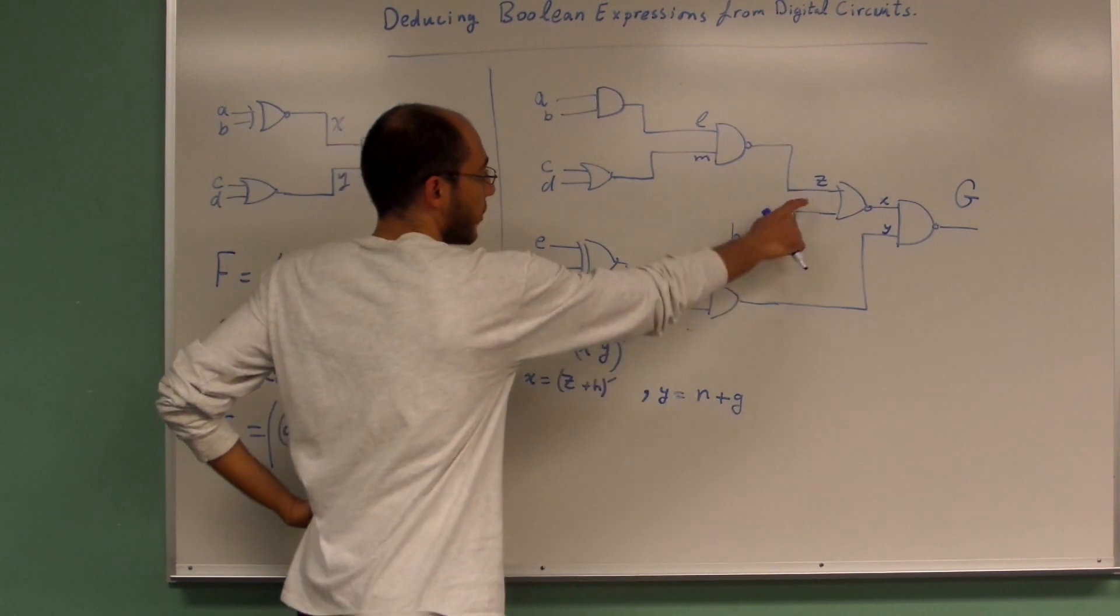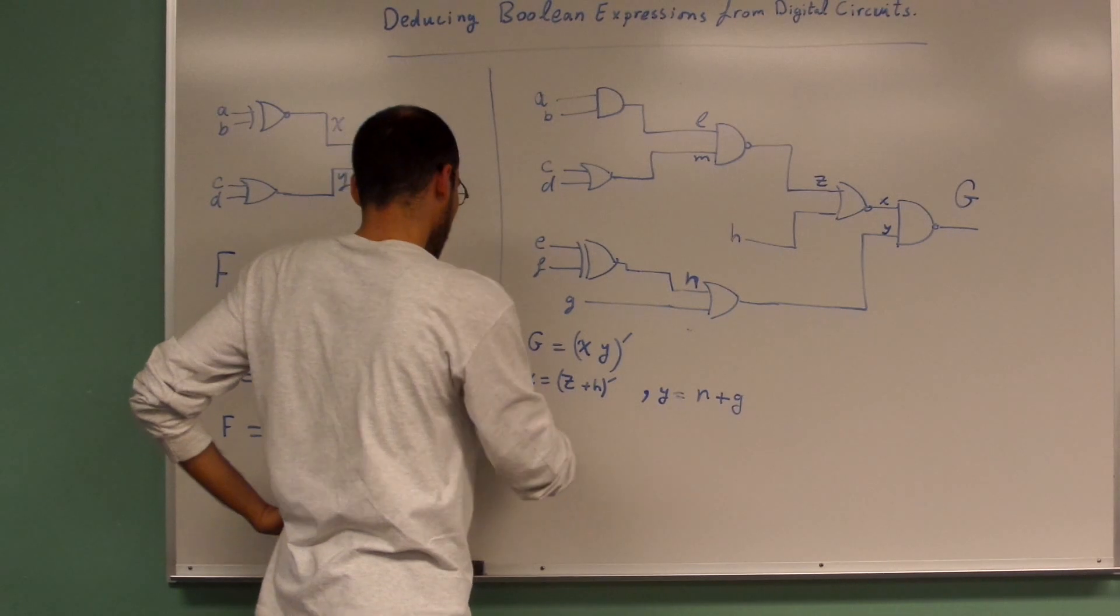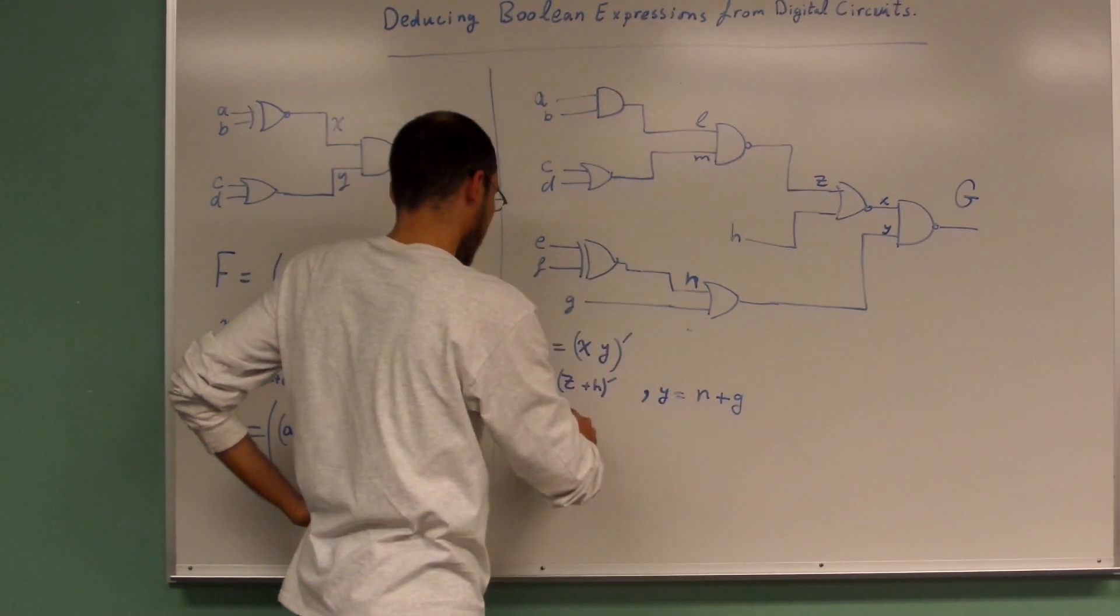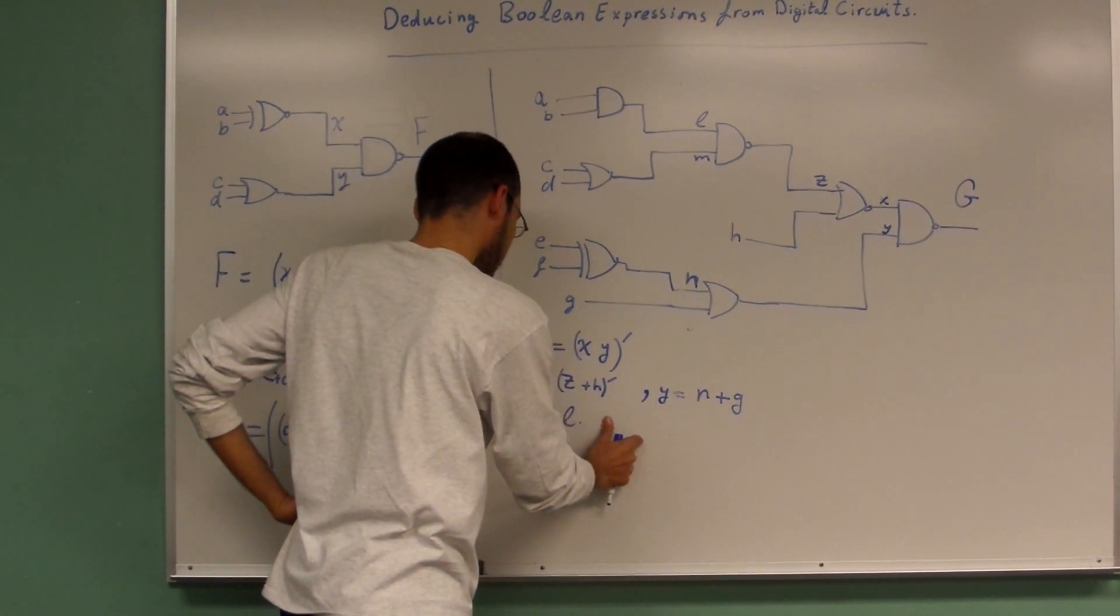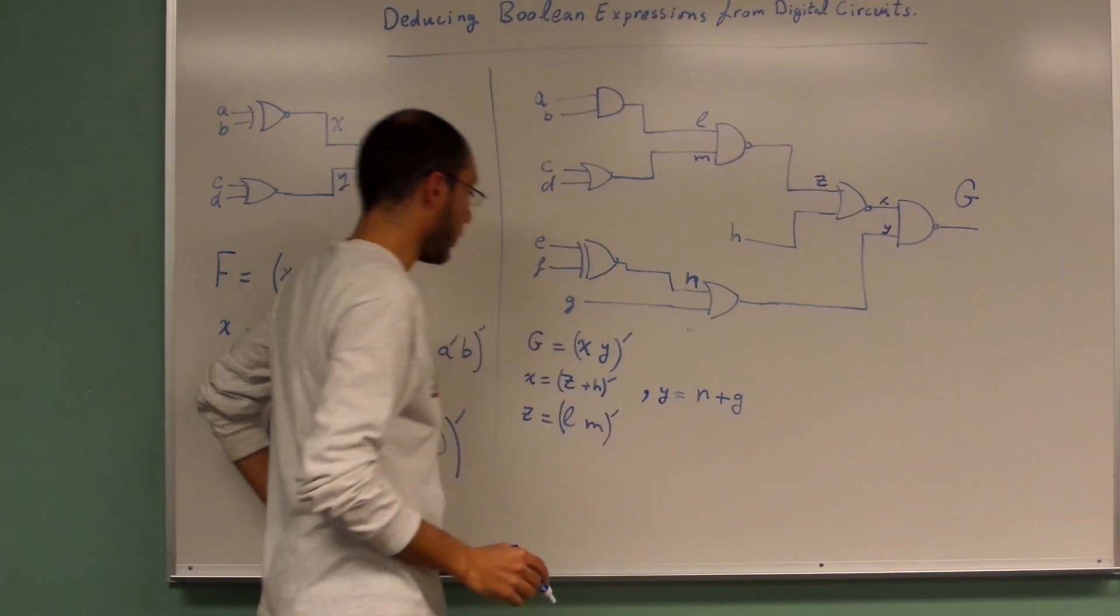And then proceed. We finish the X and finish the Y, then proceed with the Z. What is Z? Z equals L and M, and then we have a not gate.